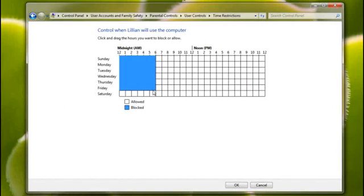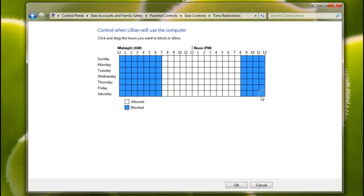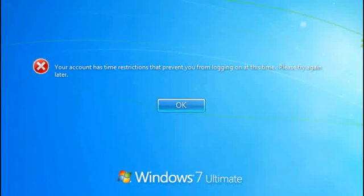Then, I can click and drag to block out the days and times when she can't use the computer. Now, if Lillian tries to log on at a time when she's not allowed to use the computer, she sees this screen.